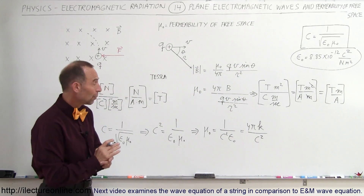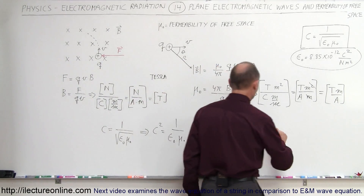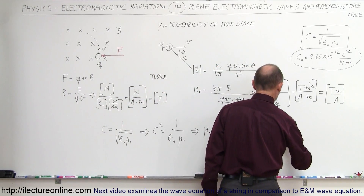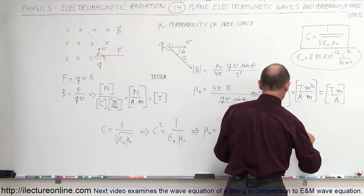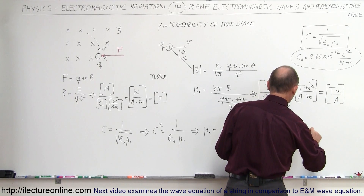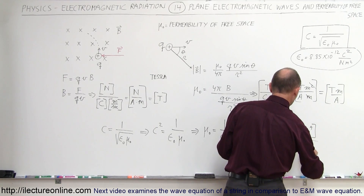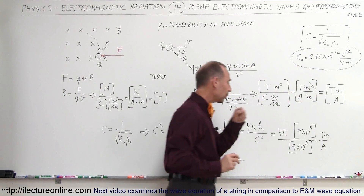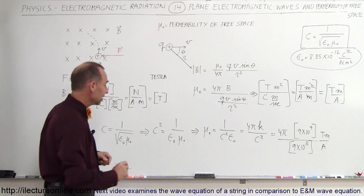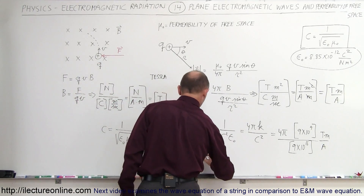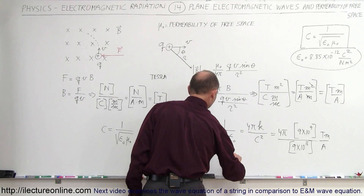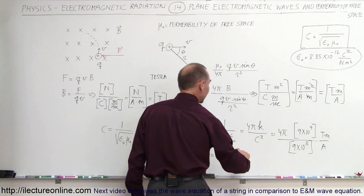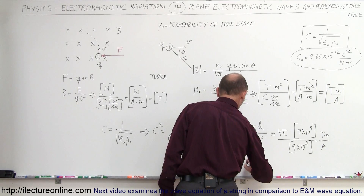Now we put in the values for K and C. This equals 4π times K, where K equals 9 times 10 to the 9th, and C squared equals 9 times 10 to the 16th — with units of Teslas times meters per Amp. Simplifying, mu sub-naught equals 4π times 10 to the minus 7, with units of Teslas times meters per Amp.